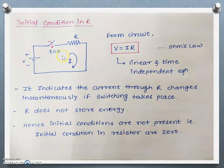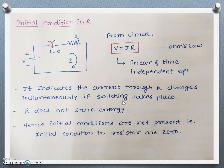Now let's see the initial condition in R. The circuit shows a voltage source, a switch which is going to close at t=0, and a resistance. The current i flows in the circuit when the switch is closed. We can write V = iR according to Ohm's law. This equation is linear and time-independent, so it indicates that current through the resistor can change instantaneously. R does not store any energy, so initial conditions are not present. At t=0⁺ the resistor remains as a resistor, and at t=∞ the final condition also shows the resistor remains as a resistor.